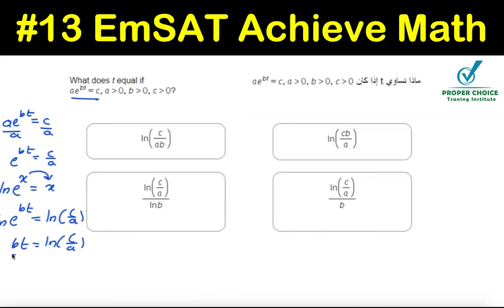Now we are asked to solve for t, so divide by b on both sides. Then you will be getting t equals ln c by a divided by b. That is the last choice. Option d is the right answer to this question.